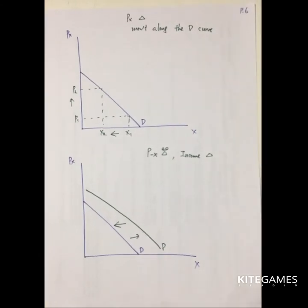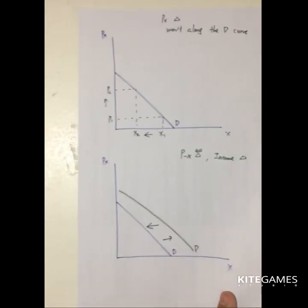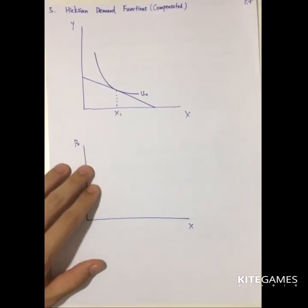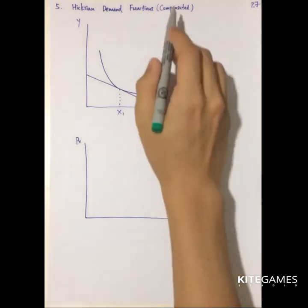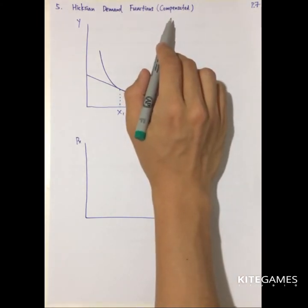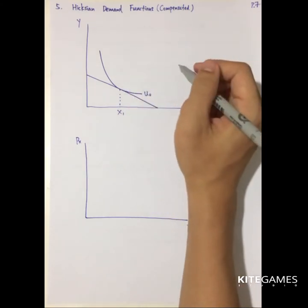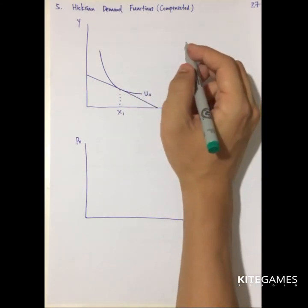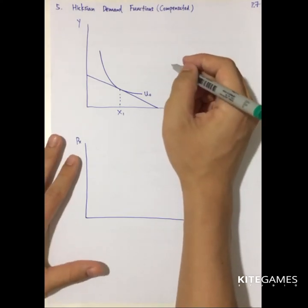Those were the Marshallian demand curves we were referring to. Next we will talk about the Hicksian demand curve, also called the compensated demand function. What is special about the Hicksian demand function is that we keep utility constant, meaning that we ignore the income effect.